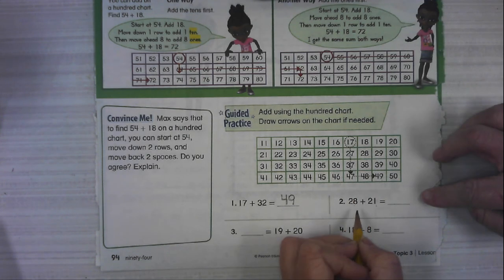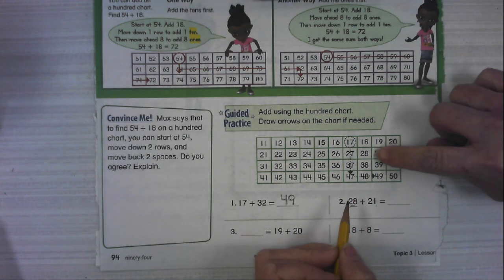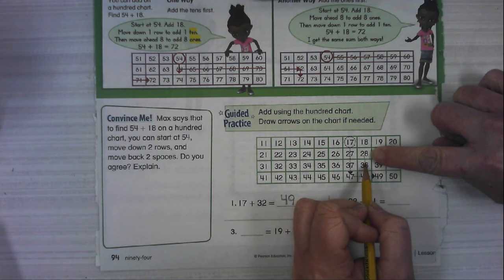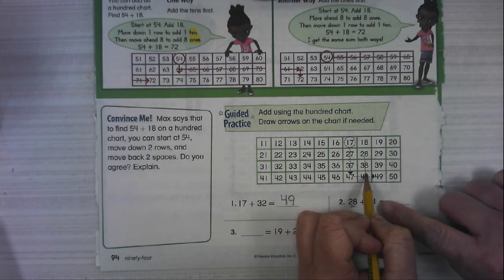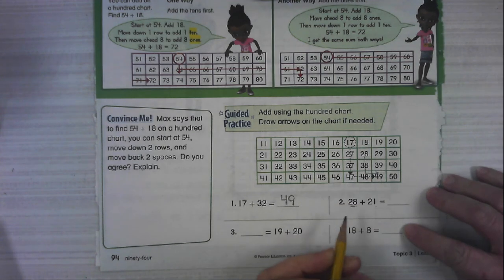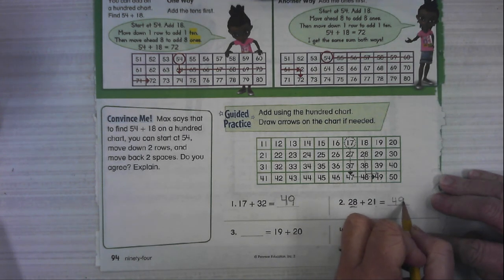Alright, 28 plus 21. Let's start with that 28. Go down two tens, 1, 2, and over 1.